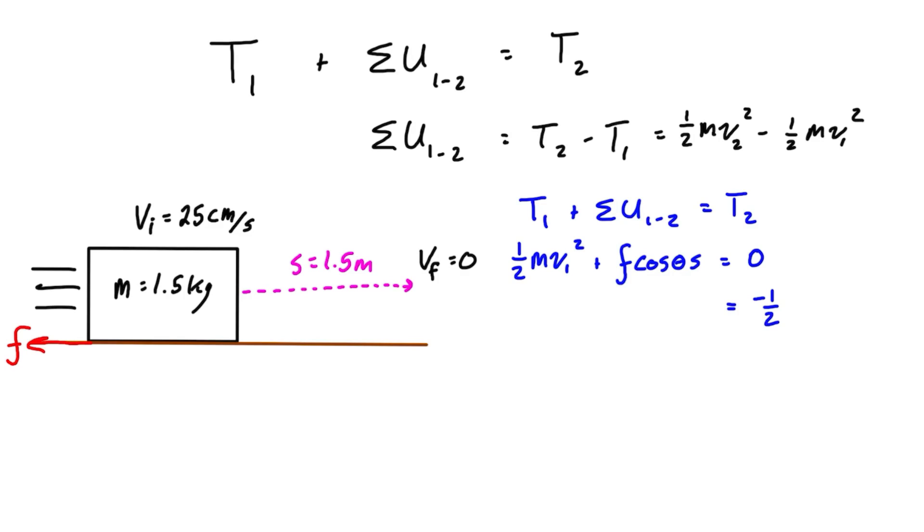180 is equal to negative 1, times s. So we can get rid of a negative on both sides, and we can bring the s to the other side. So we're left with the force of friction is equal to mv1² over 2s. We're going to run out of room down there, so we'll just bring it over to the left side here.